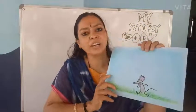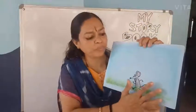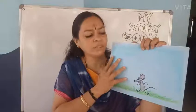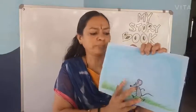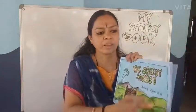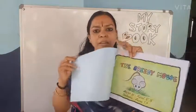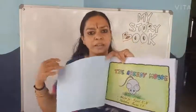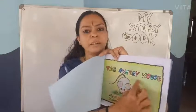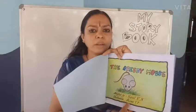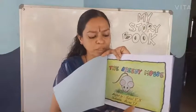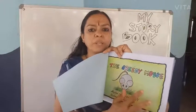On the back cover, you should also draw pictures of your story. On the first page, you should write the title of the story, the name of the author, and draw pictures.